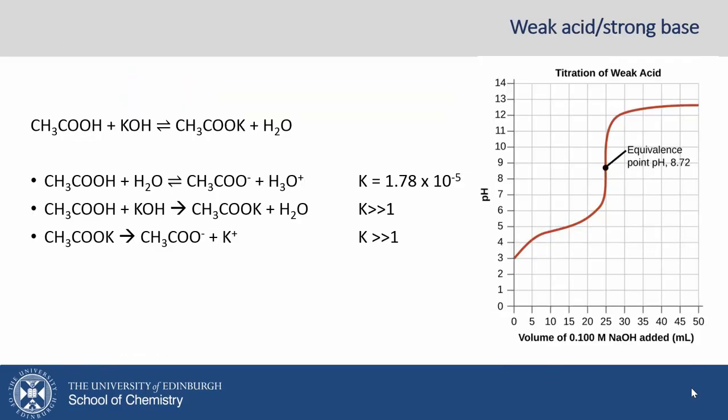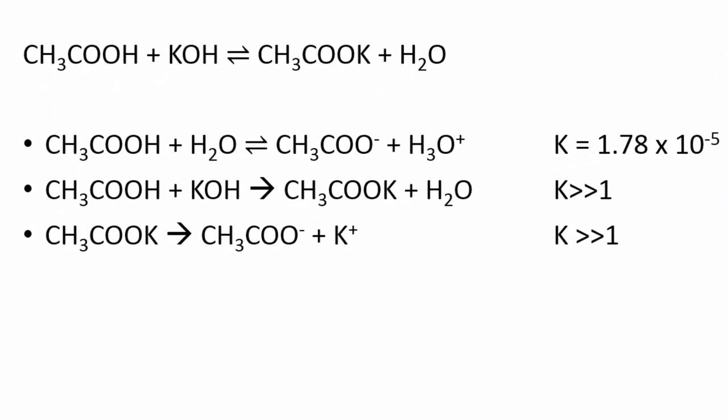Before we go into the details about the experiment proper, let's just review a weak acid-strong base titration. When we have a weak acid such as ethanoic acid and reacted with potassium hydroxide or some strong base, there is an equilibrium which forms between the acid and conjugate base.